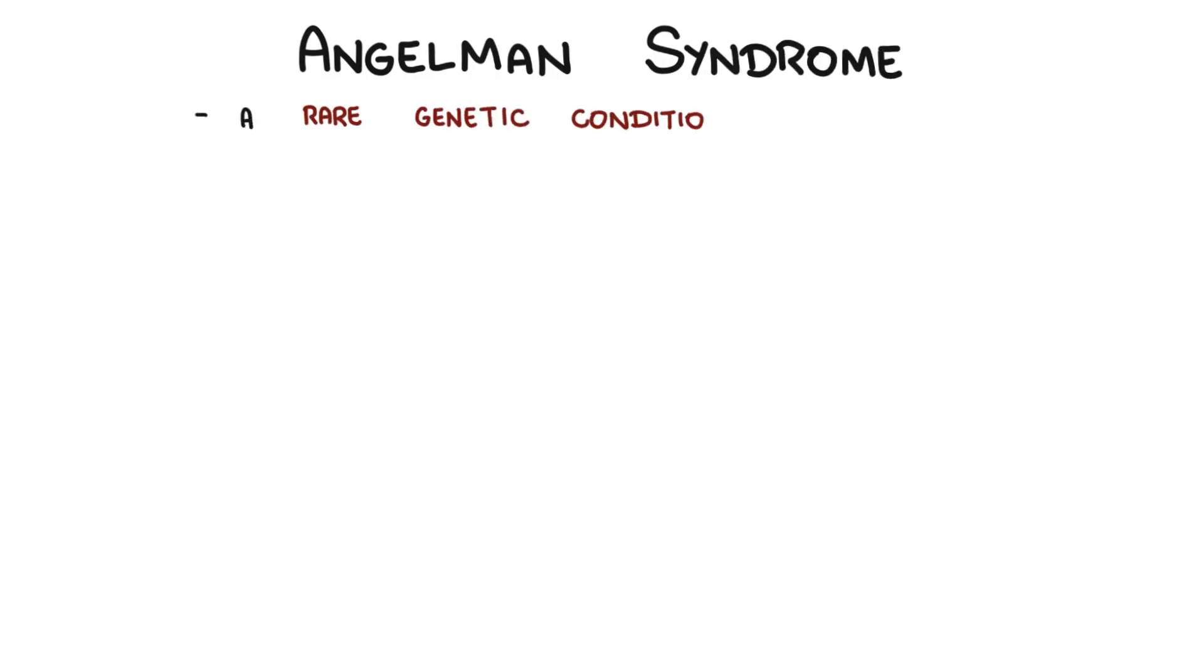Angelman syndrome is a rare genetic condition which affects approximately 1 in 12 to 20,000 people, although many cases go undiagnosed.